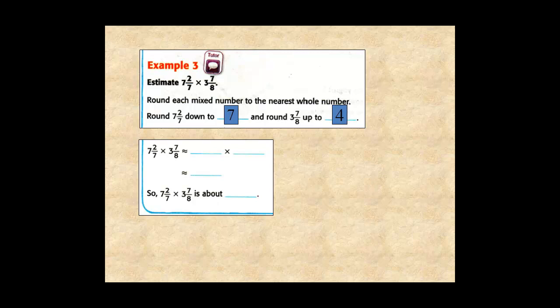Then, the product is approximately 7 × 4, which equals 28. So, 7 2/7 × 3 7/8 is approximately equal to 28.